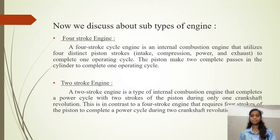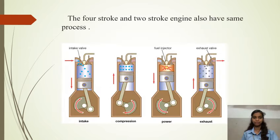Now we will discuss the subtypes of engine. First is the four-stroke engine — an internal combustion engine in which the four main operating systems like intake, compression, power, and exhaust happen in four strokes, from TDC to BDC; the piston makes two complete passes in the cylinder to complete one operating cycle. Second is the two-stroke engine, an internal combustion engine in which the four main operating systems happen in two strokes. Both four-stroke and two-stroke engines have the same processes: intake, compression, power, and exhaust.